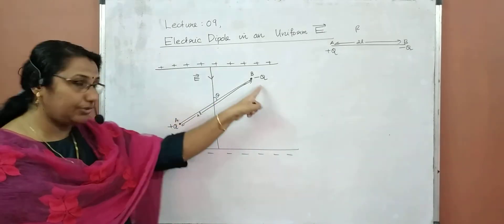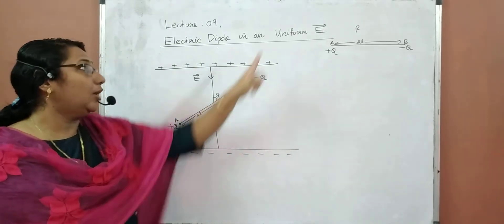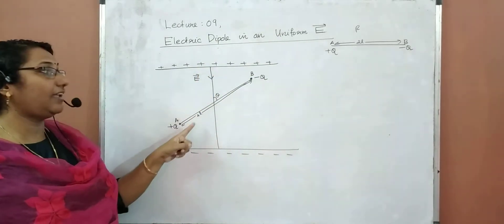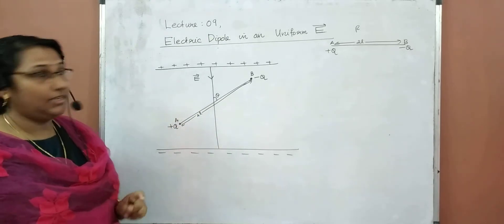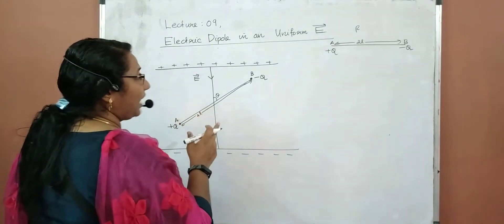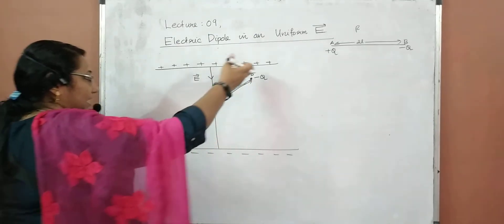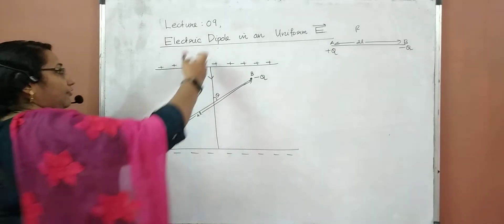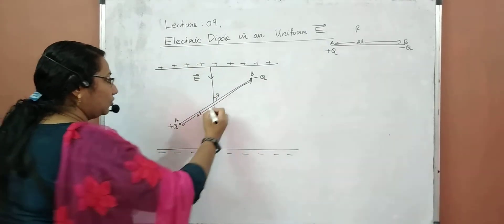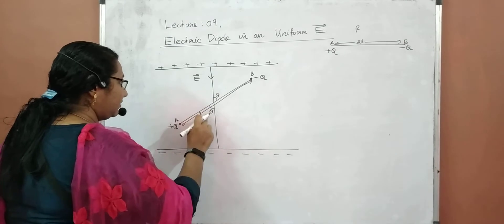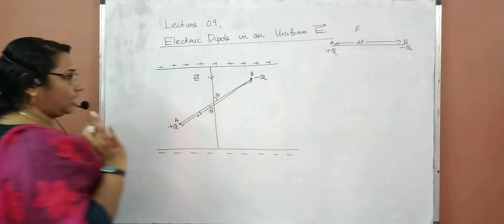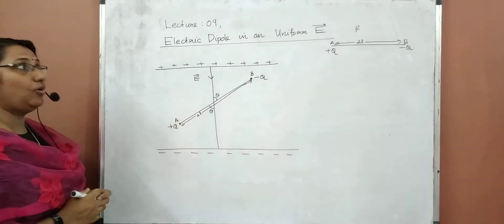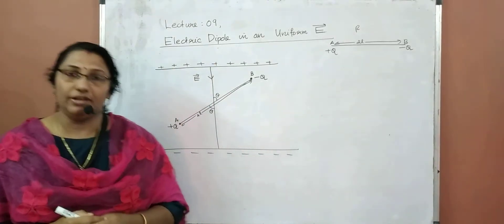The direction of dipole moment is always from negative to positive. The field is acting downward. So the dipole is placed making an angle theta with the field. If this angle is theta, this angle is also theta.